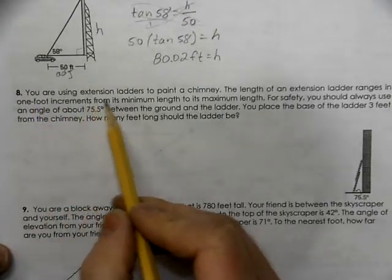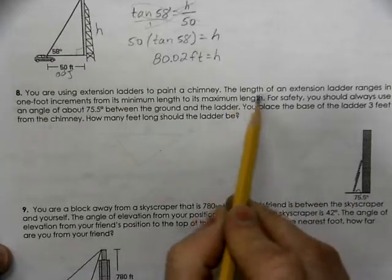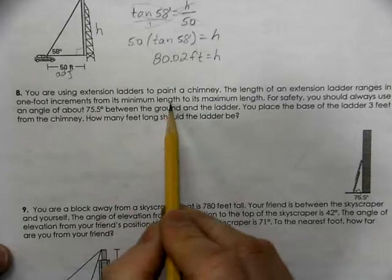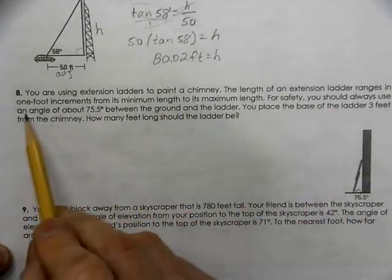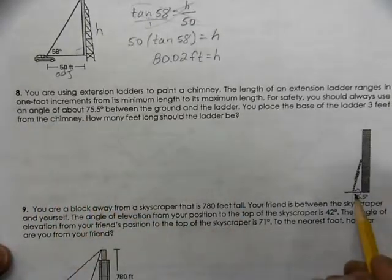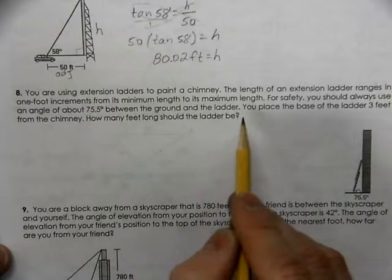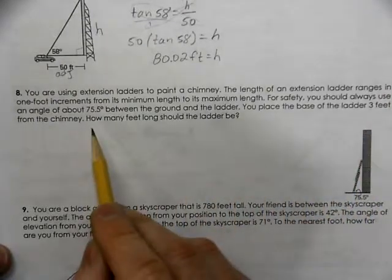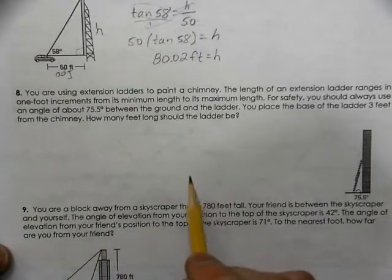You're using an extension ladder to paint the chimney. The length of the extension ladder ranges in 1 foot increments from a minimum length to its maximum. For safety, you should always use the angle of elevation of 75.5 degrees with the ground. You place the base of the ladder 3 feet. How many feet should the ladder be?